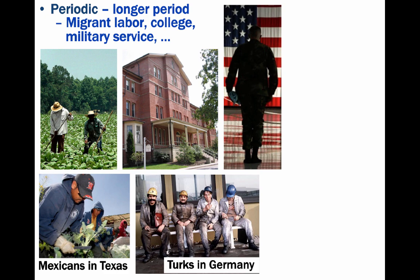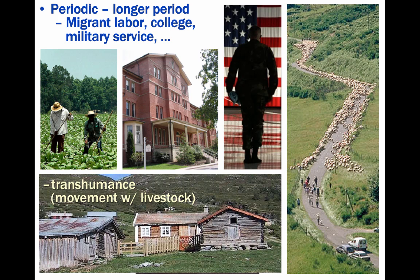A specialized form of periodic movement is transhumance — a system of pastoral farming in which ranchers move livestock according to the seasonal availability of pastures. This is a periodic form of movement because it involves a long period of residential relocation, unlike classic nomadism. As you can see here in Switzerland, for example, cattle or sheep are driven up the mountain slopes to high fresh pastures during the summer, and then are brought back down during the wintertime.